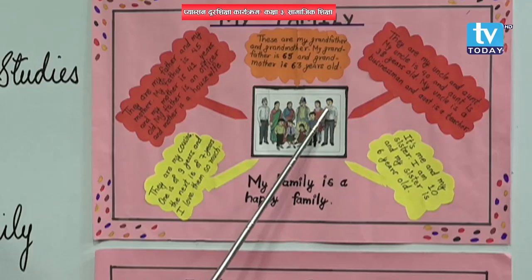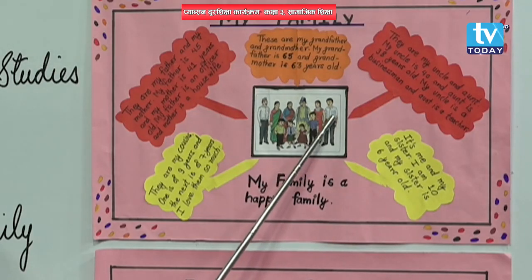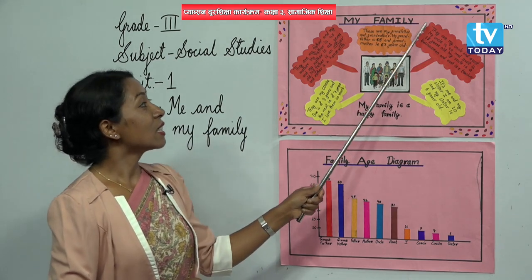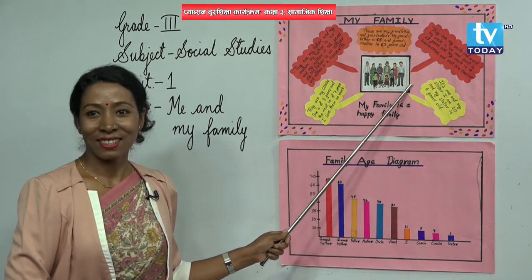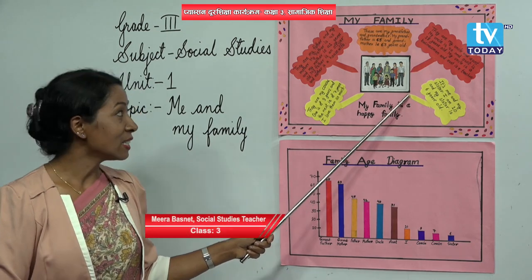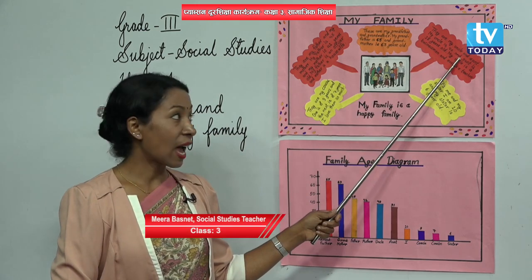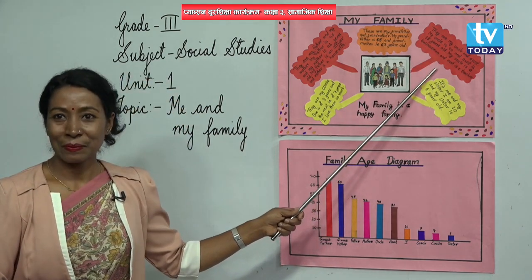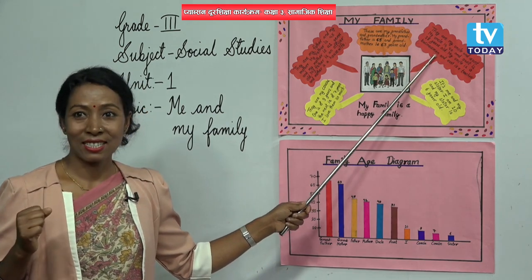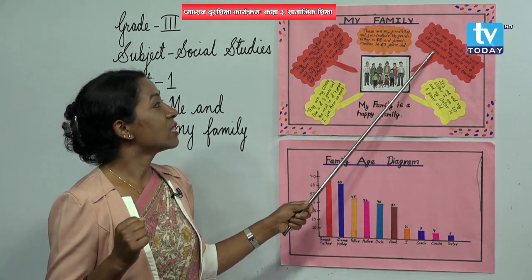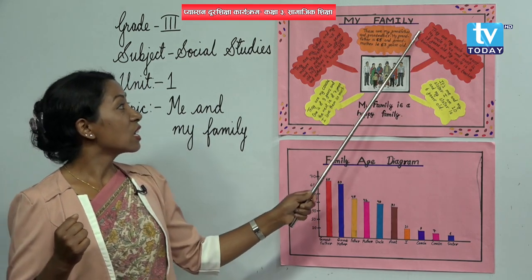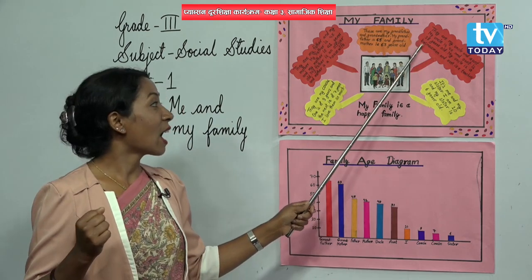Here also two people are standing. Who are they? They are my uncle and aunt. Do you have uncle and aunt? My uncle is 40 and aunt is 38 years old. Uncle is 40 years and aunt is 38 years. My uncle is a businessman and aunt is a teacher. In this family, uncle is a businessman and aunt is a teacher.